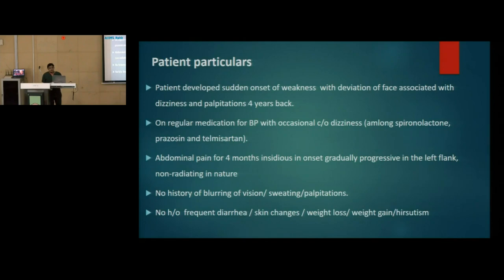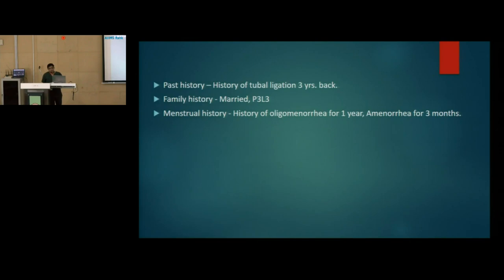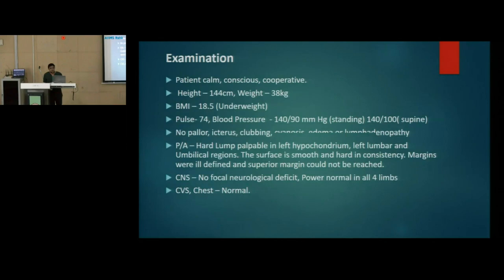There were no associated symptoms of burning micturition, fever, lower urinary tract symptoms, trauma, or altered bowel and bladder habits. In the past history, the patient had a history of sudden onset weakness with deviation of face, associated with dizziness and palpitation, four years back. She was started on anti-hypertensives at a local hospital and symptoms resolved after 10 days without further workup. There was no history of blurring of vision, sweating, or palpitations currently, and no history of diarrhea, skin changes, weight loss, or weight gain. In family history, she is a married woman with three living issues and had history of oligomenorrhea for one year and amenorrhea for the past three months.